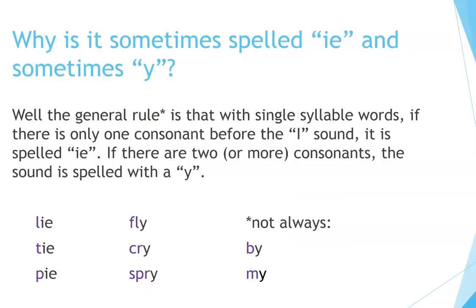Why is it sometimes spelled I-E and sometimes Y? The general rule is that with single syllable words, if there is only one consonant before the I sound, it is spelled I-E. If there are two or more consonants, the sound is spelled with a Y. For example: lie, tie, pie, fly, cry, spry. But not always — for example: buy, my.